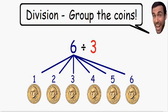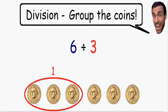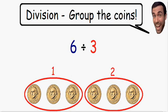So how many groups of 3 do we have with these 6 coins? Well here we have one group of 3, and here we have another group of 3. We have 2 groups of 3 with these coins. So 6 divided by 3 is equal to 2.